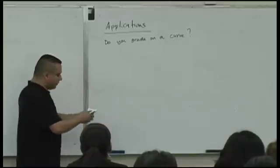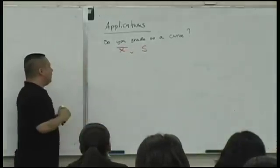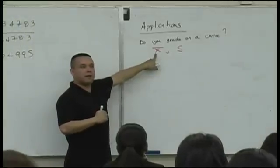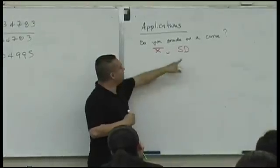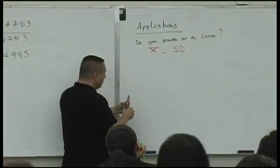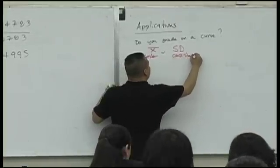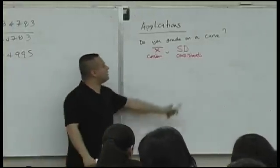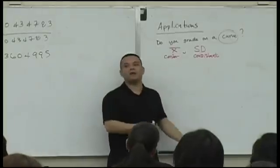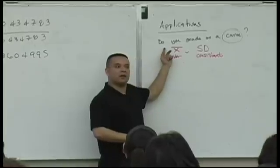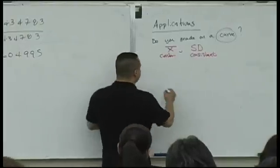The curve is based on two values: the mean and the standard deviation. The mean is the center of our data, and the standard deviation tells us how consistent our data is. So the curve has nothing to do with the highest or lowest data value — it only has to do with the center and the consistency.